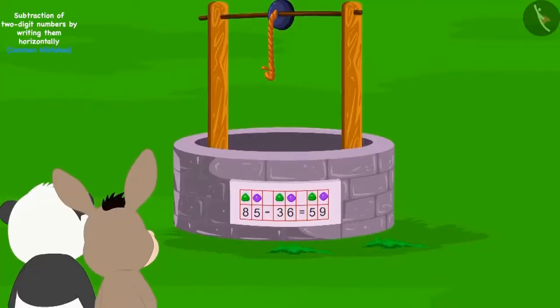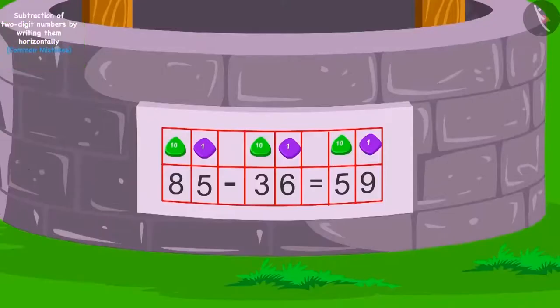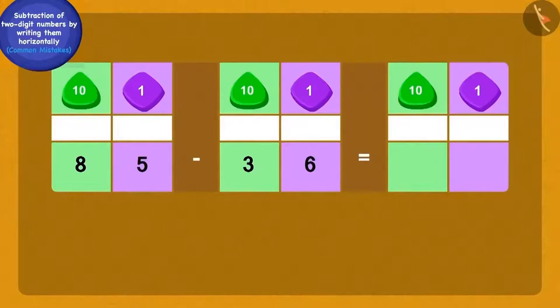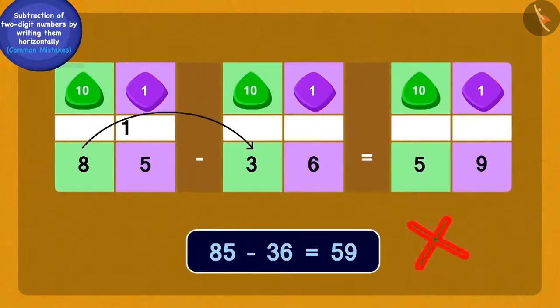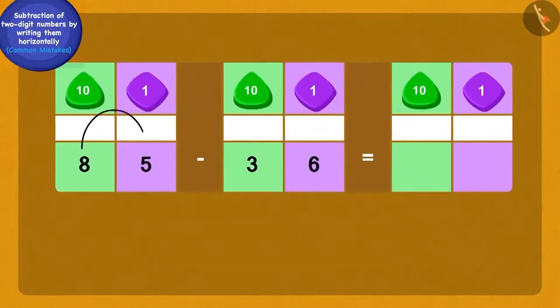Now, Bola and Golupanda saw a well. This puzzle was written on the well. Children, is this subtraction correct? Yes, there is a mistake in this subtraction. Can you identify the mistake here? Absolutely correct. Here, we cannot subtract the six ones of 36 from the five ones of 85. So, we have to borrow one ten from the eight tens of 85. In this subtraction, by borrowing, six ones have been subtracted correctly from 15 ones. But, after borrowing the one ten, they forgot to reduce the eight tens to seven tens. So, children, what will be the correct answer to this subtraction? Yes, the correct answer of this subtraction will be 49.